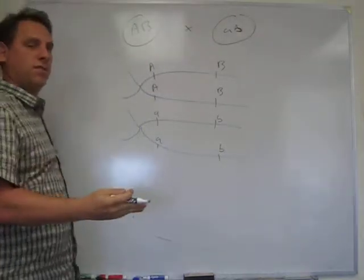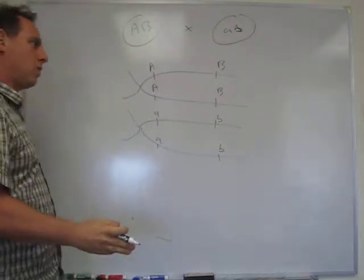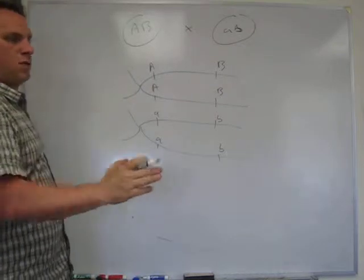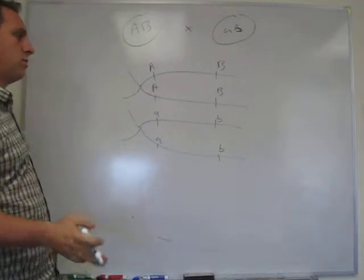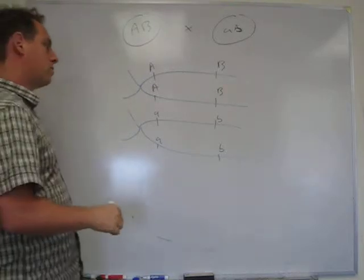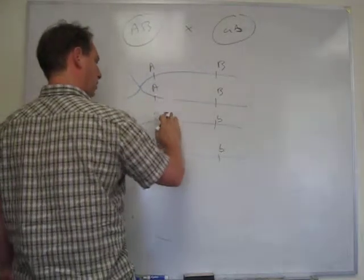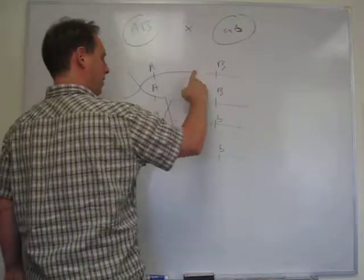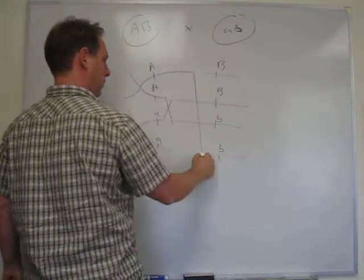Now, in the case of linkage, remember we talked about how parental dietypes are much more frequent than non-parental dietypes. And the reason that's the case is because the only way in which you produce non-parental dietypes is if you have a crossover right here, and you also have, say, for example, a crossover right here.